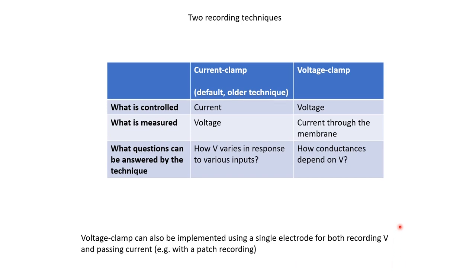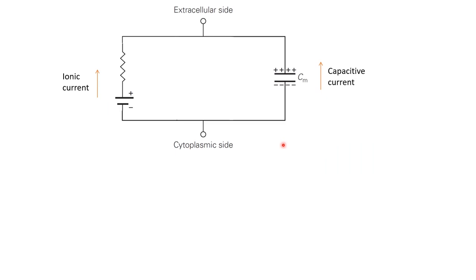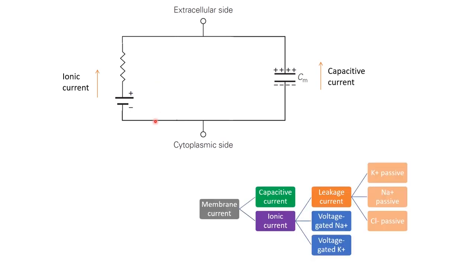The current through the membrane can be divided into subcategories. The capacitive current charges the lipid bilayer — it comes into play when the membrane potential is changing, and is zero when the membrane potential is fixed. The ionic current flows through ion channels and can be subdivided into leakage currents, which flow through passive ion channels that are always open, and active conductances including voltage-gated sodium and potassium conductances, which are the most important for understanding action potentials.